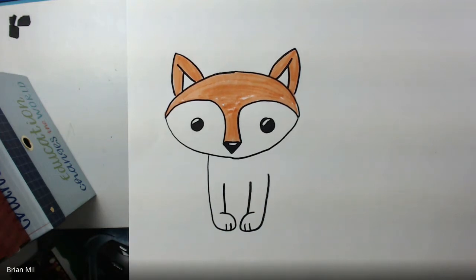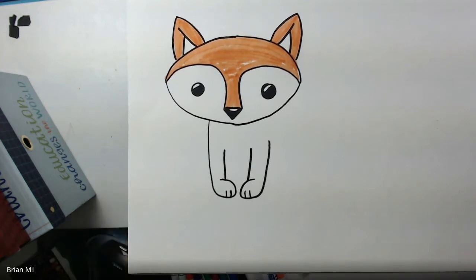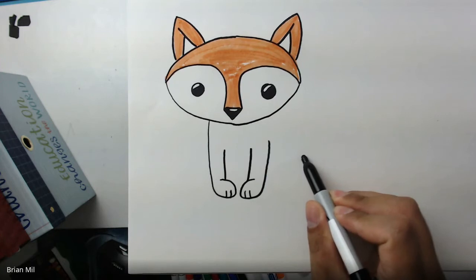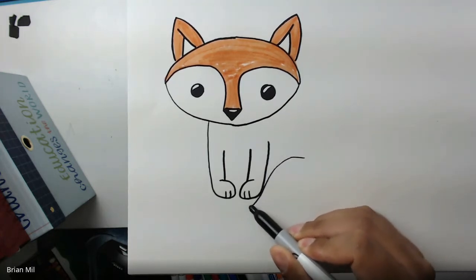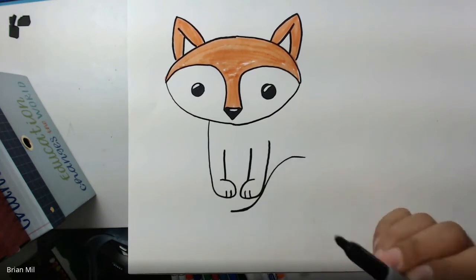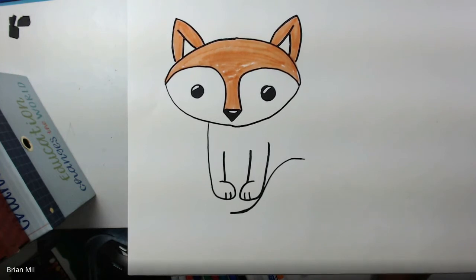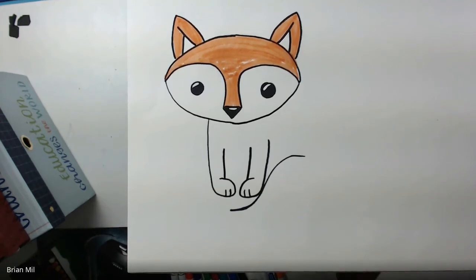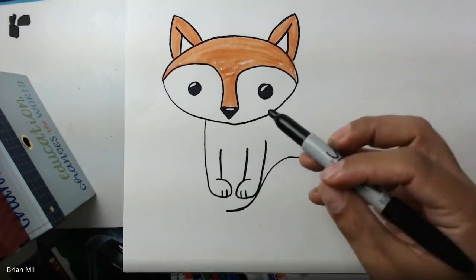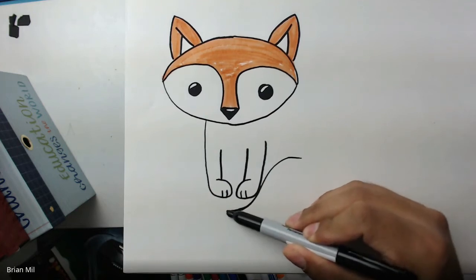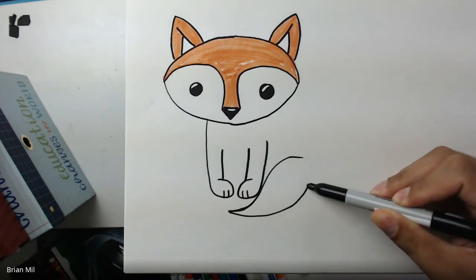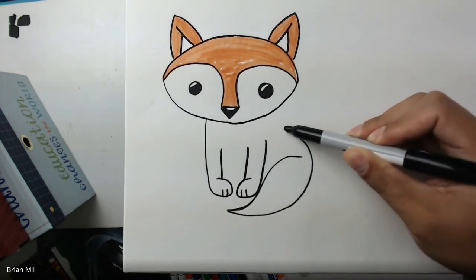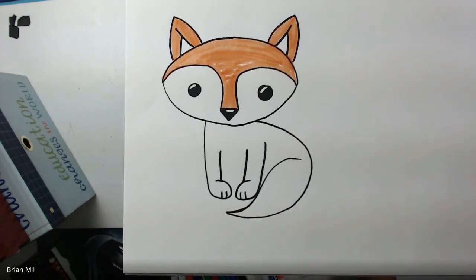This next part might look strange, but it'll make sense once we're done. It's going to be its nice puffy tail. So I'm going to go from over here, curve down. And then once I hit the foot, curve out like that. Here comes a nice confusing one. So make sure you draw this light in pencil just in case if you get it wrong the first try. Because it's going to be a long line. I'm going to go from this part of the tail. I'm going to curve all the way around, all the way up and back, and then basically towards the head.